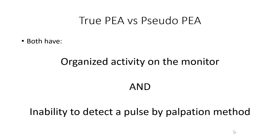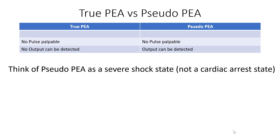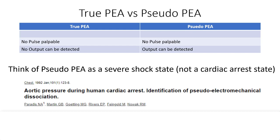So how can you distinguish true PEA from pseudo-PEA? They look the same, and they both have organized activity on the monitor, and they feel the same as both do not have palpable pulses. The big difference is in the detection of output. In true PEA, there is no palpable pulse and there is no output that can be detected. In pseudo-PEA, there is no palpable pulse, but you can detect output by other means — this patient is alive, but you just can't feel a pulse. Think of pseudo-PEA as a severe shock state and not a cardiac arrest state. We have known about pseudo-PEA for decades, since we used to call PEA electrical-mechanical dissociation back in the 1990s.